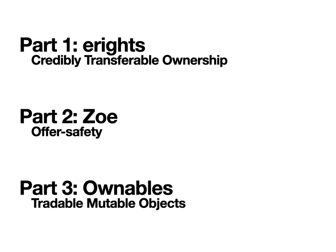The talk itself is split into three parts. In the first part, I'm going to explain our approach to ownership, which we call e-rights. The key attribute that distinguishes it from other ownership systems is credibly transferable ownership. In the second part, I'll be speaking about ZOE, our smart contracting framework that provides an important safety property we call offer safety. And in the third part, I'll be speaking about the new result — still in progress engineering-wise — which is ownables, where we extend this framework to deal with the special problems that have to do with trade of mutable objects.